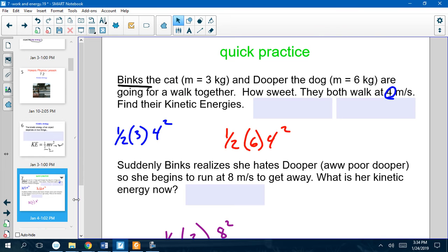So, let's go into a practice problem. So, let's say we have Binks, the cat, who has a mass of three kilograms, and Dooper the dog. Dooper gets offended if you don't say his name a bunch of times. They're going for a walk, and they're both walking at four meters per second. So, find their kinetic energy.